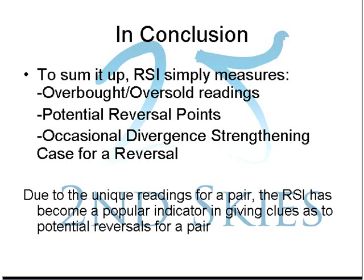In conclusion, the RSI is a simple indicator that gives us overbought and oversold readings. Even without access to order flow in the currency market, it gives us a relative clue as to whether buyers or sellers are in strong control. The overbought and oversold readings point to a pending potential reversal or swing point, and using that in combination with divergence strengthens the case for any reversal we're looking to trade. Because of this, the RSI has become a very powerful and popular indicator for identifying swing or reversal points on any pair.